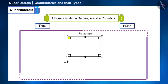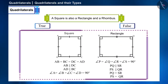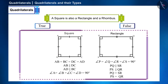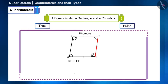The angles of a rectangle are also right angles and its opposite sides are parallel, but only its opposite sides are equal. However, since all the sides of the square are equal, its opposite sides are definitely equal too. Therefore we can call a square a rectangle.